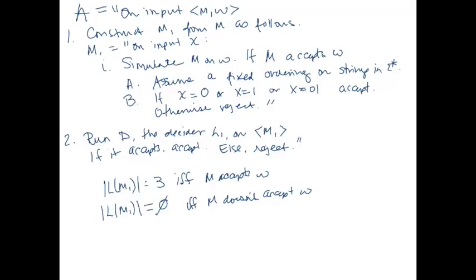Why do we need M1? If the decider D exists, it tells us whether the language of M1 has size 3 or not. When we feed M1 to D: if D accepts, it's because M accepted W and the language of M1 has size 3; if D rejects, it's because the language of M1 is not 3 — specifically it's empty, size 0 — which happens only if M does not accept W. So this decider D allows us to decide ATM through the construction of M1.